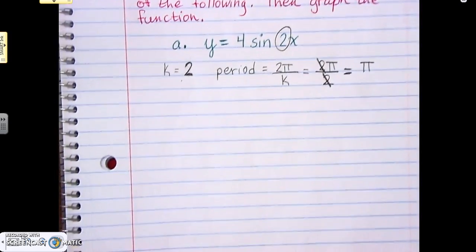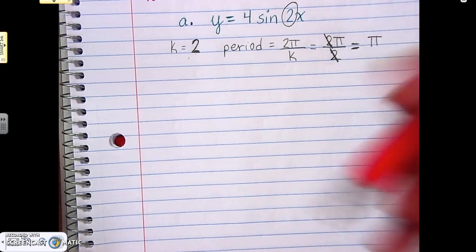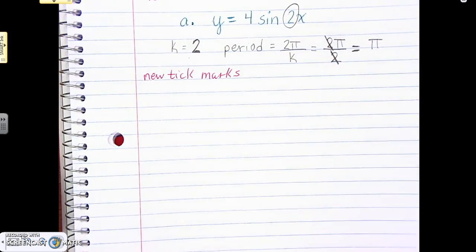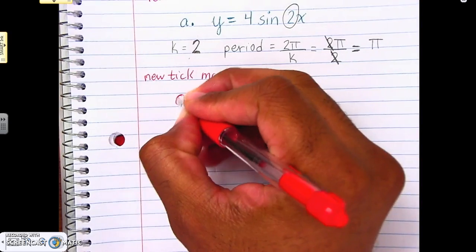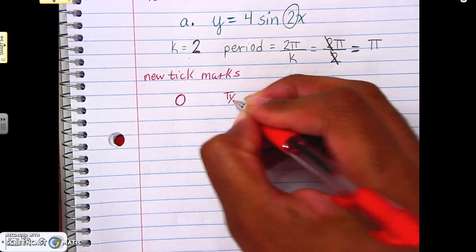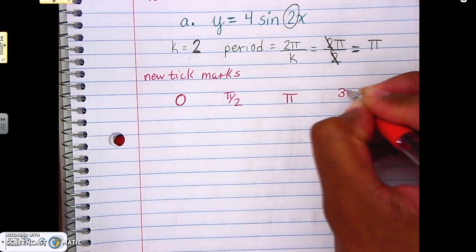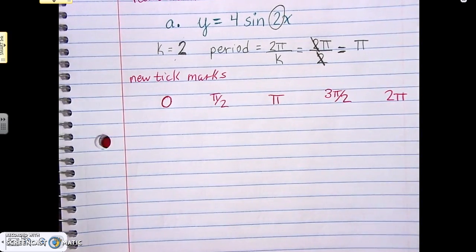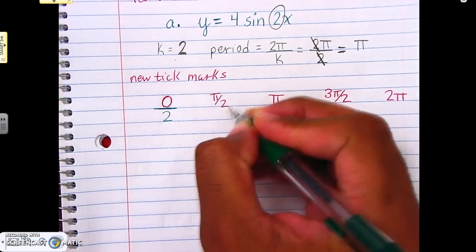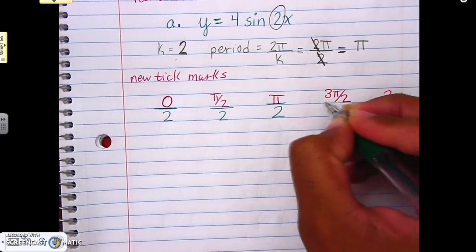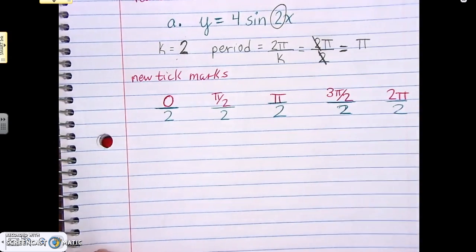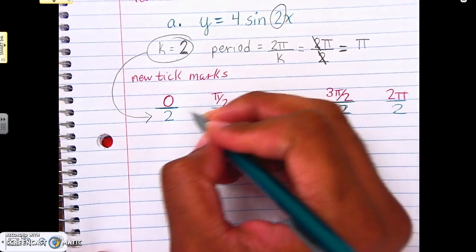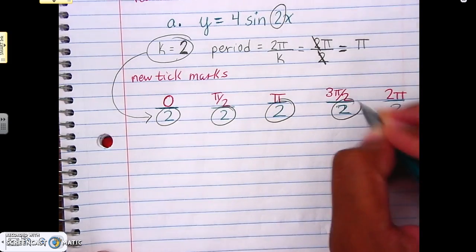Okay, now here, we're going to go to our new tick marks. Remember, we have to remember the old tick marks, and then divide everything by k. So, right now, the old tick marks first. So, that's the original tick marks there, and we divide them again by k, and here our k is 2.